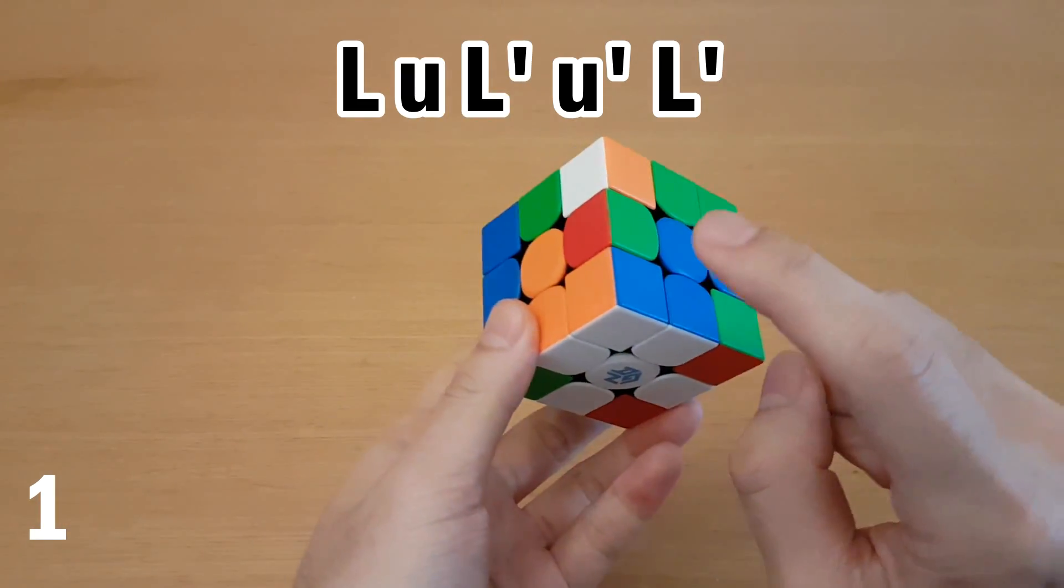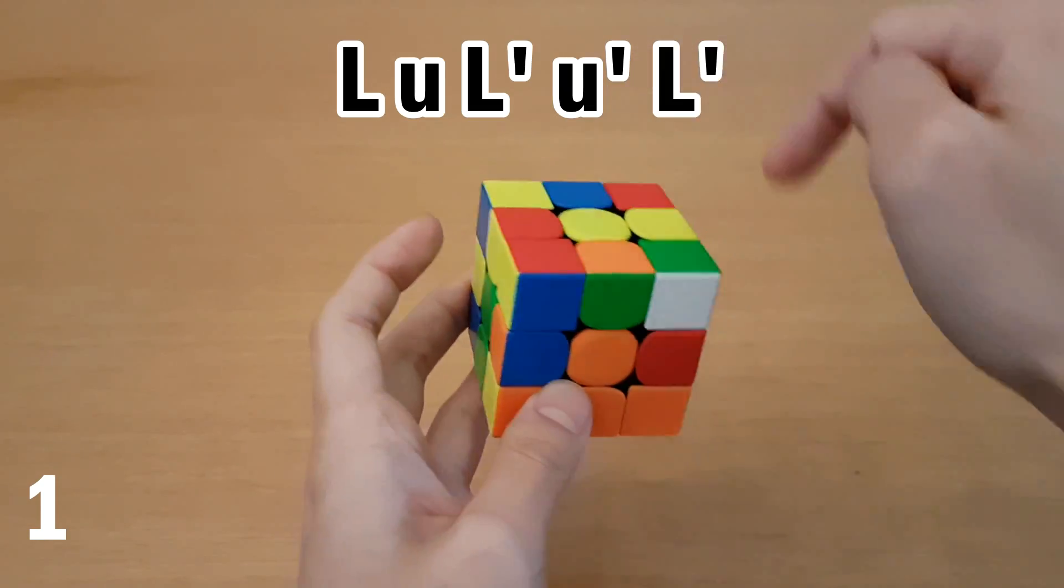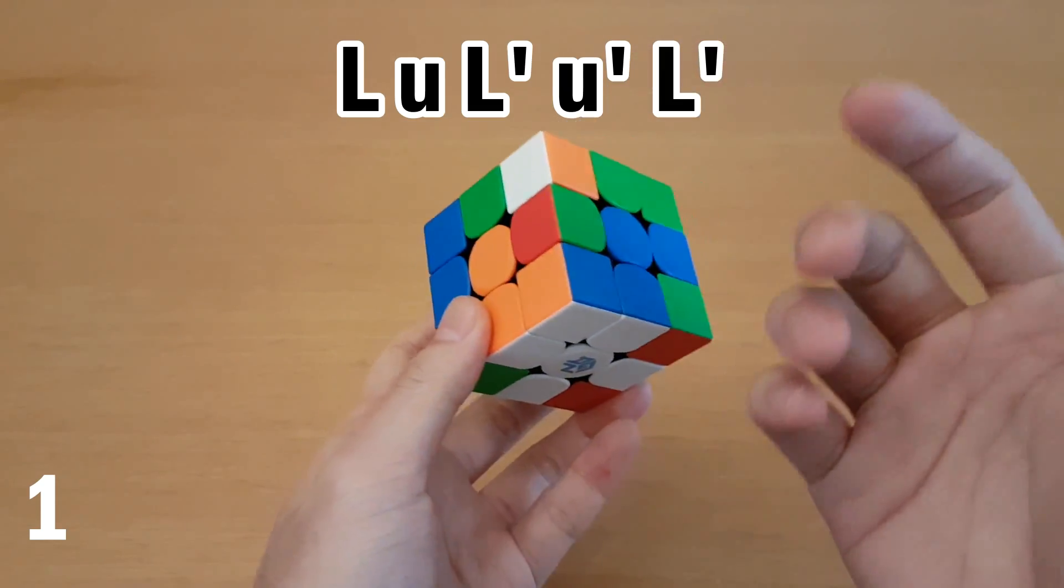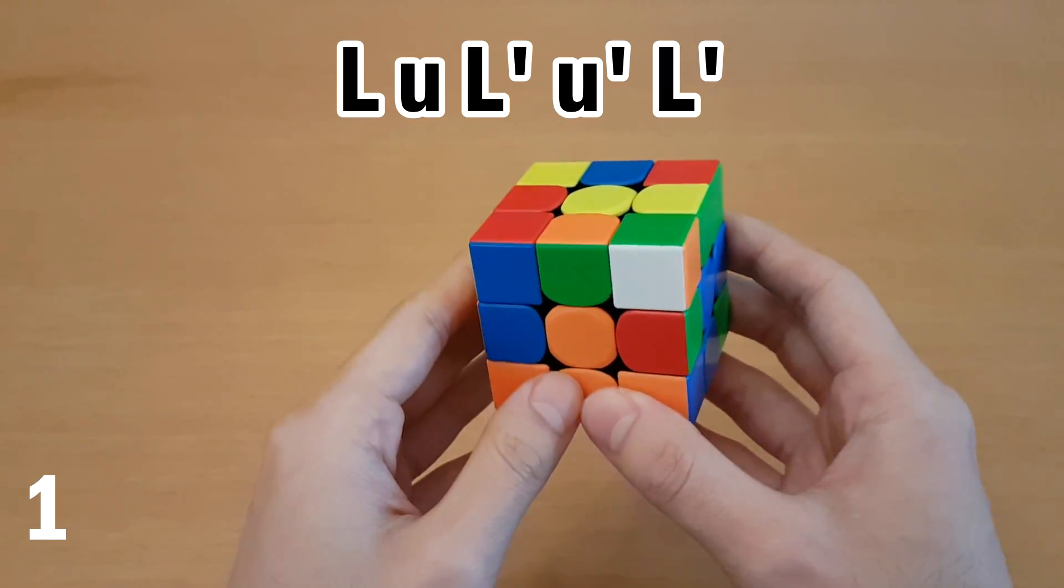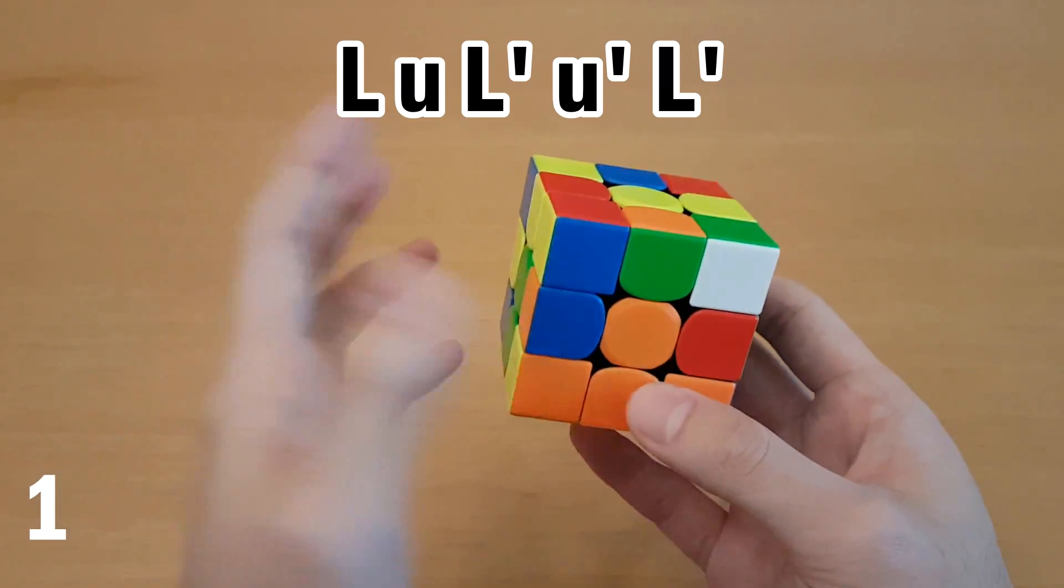This algorithm is really good because it saves you from having a solved corner and edge in the top layer as your last F2L slot, which can be quite slow. And look-ahead can be a bit awkward with wide moves, but if you remember what it does, then it can be a little easier.